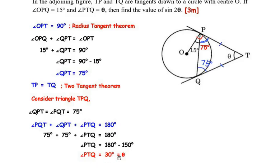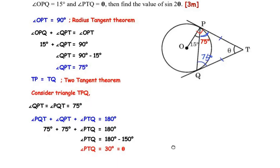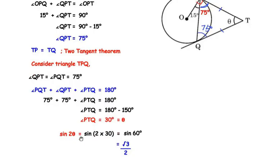Now that we have the value of theta, we need to find sin 2theta. So sin 2theta equals sin(2 × 30) equals sin 60 degrees. Sin 60 is a standard angle whose value is √3/2. So the value of sin 2theta for the given figure is √3/2.